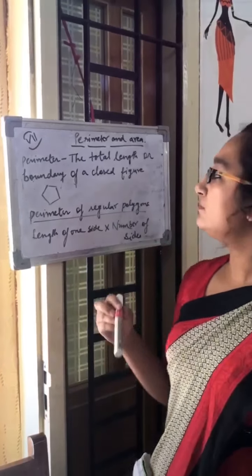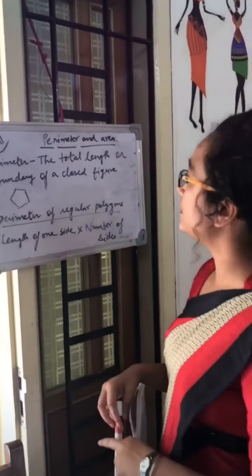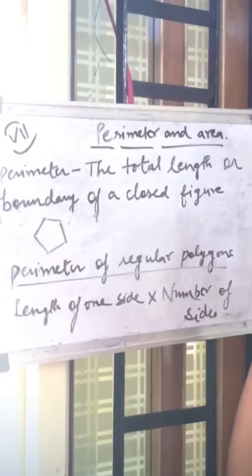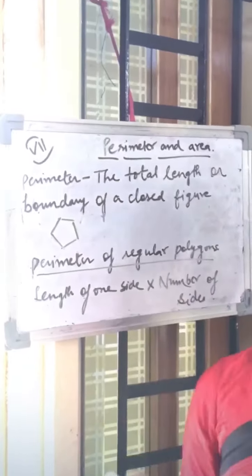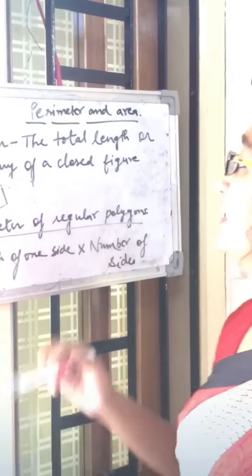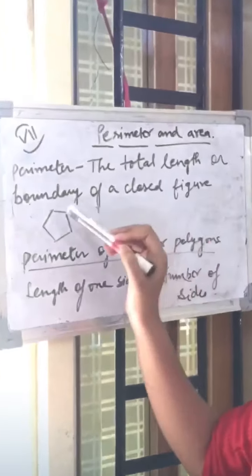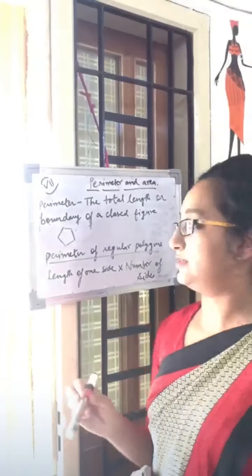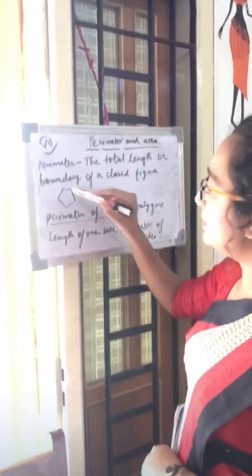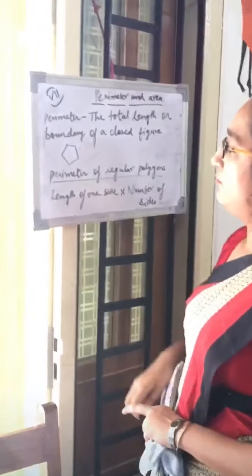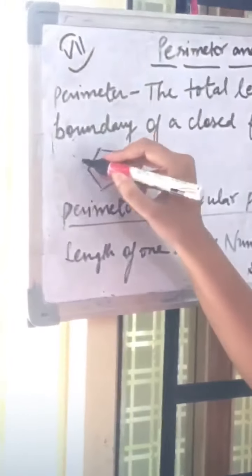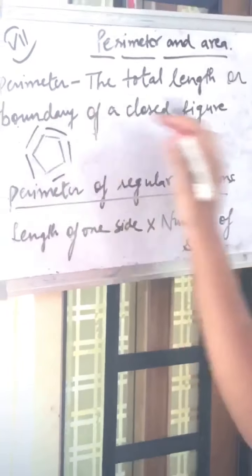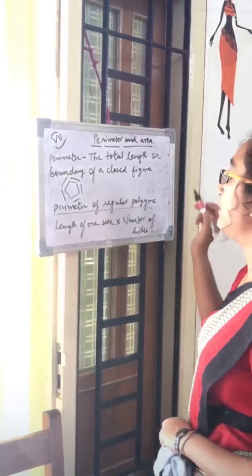Before getting into the depth of the chapter, we should first understand the meaning of terms like perimeter and area. The total length or the boundary of a closed figure is known as its perimeter — the summation of the outer region. When we add the length of all the sides, we get the perimeter of a figure.